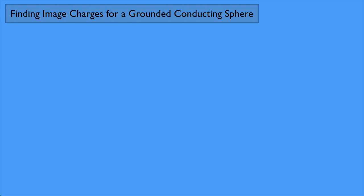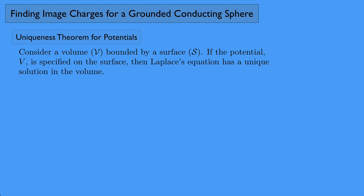I want to look at finding image charges for a grounded conducting sphere. But before I do that, let's review the uniqueness theorem for potentials. If you consider a volume V bounded by a surface S, and if the potential V is specified on the surface, then Laplace's equation has a unique solution in the volume. Once you find a solution, you know it has to be the right solution. Laplace's equation is del squared of V equals zero — it's a special case of the Poisson equation.